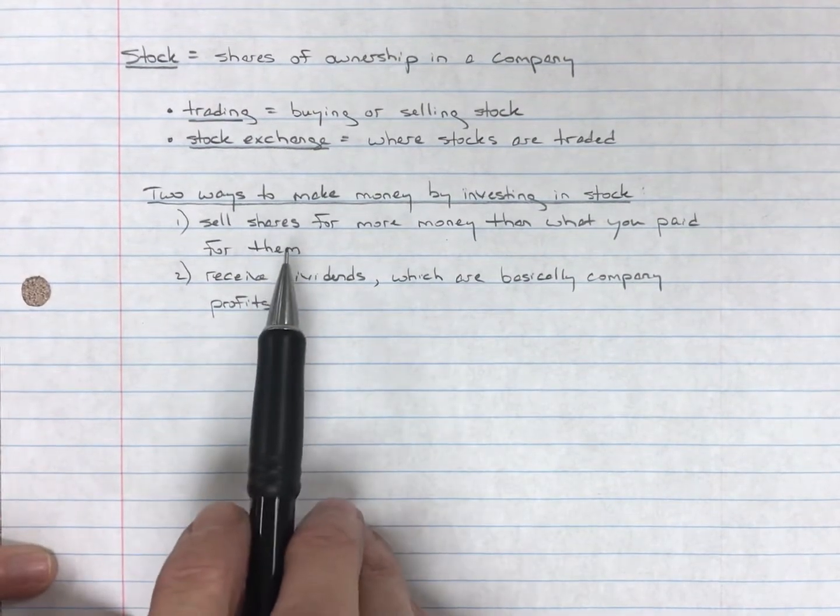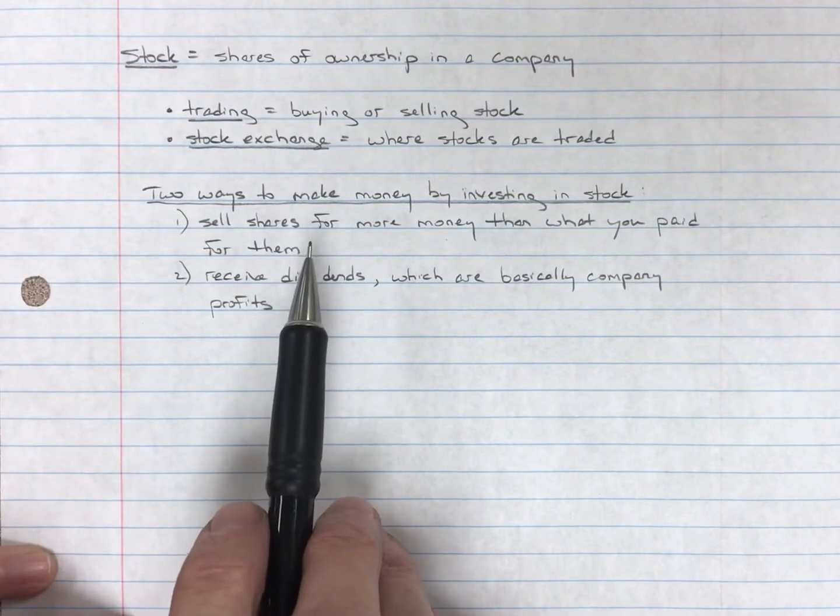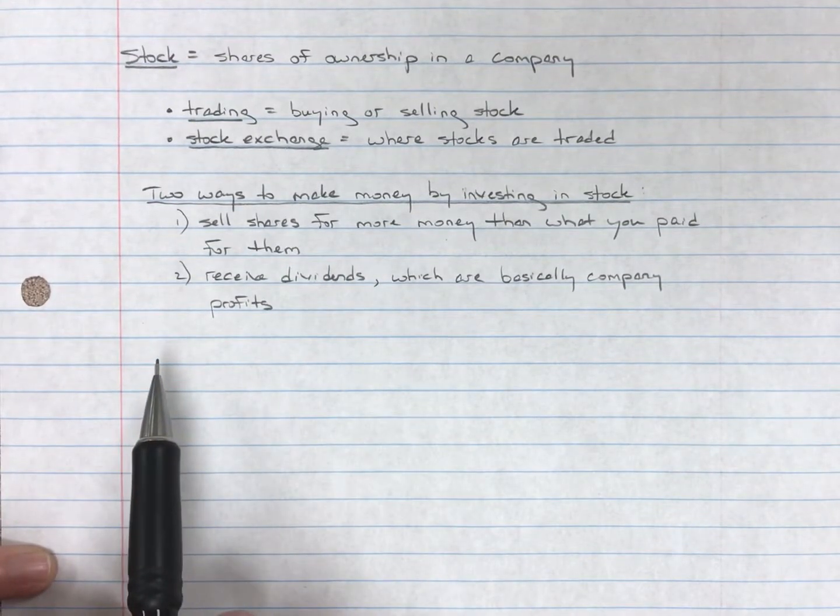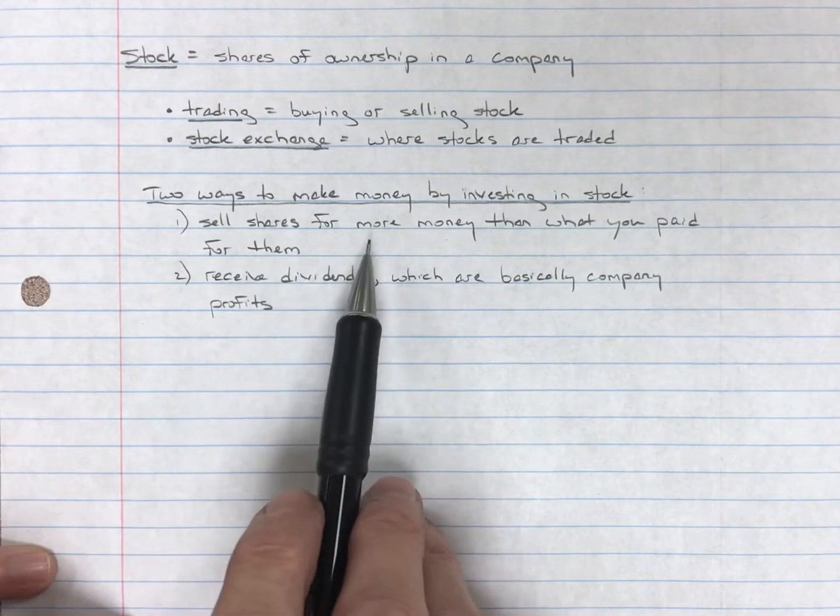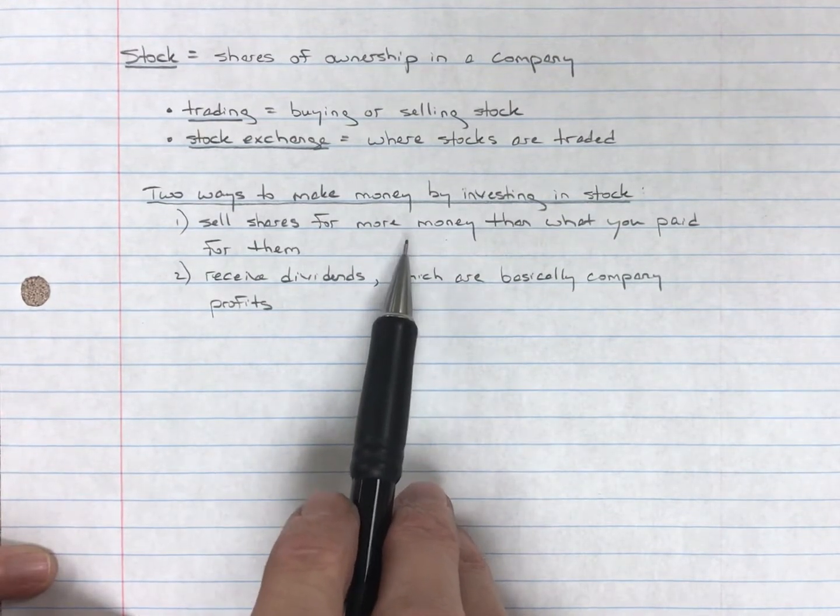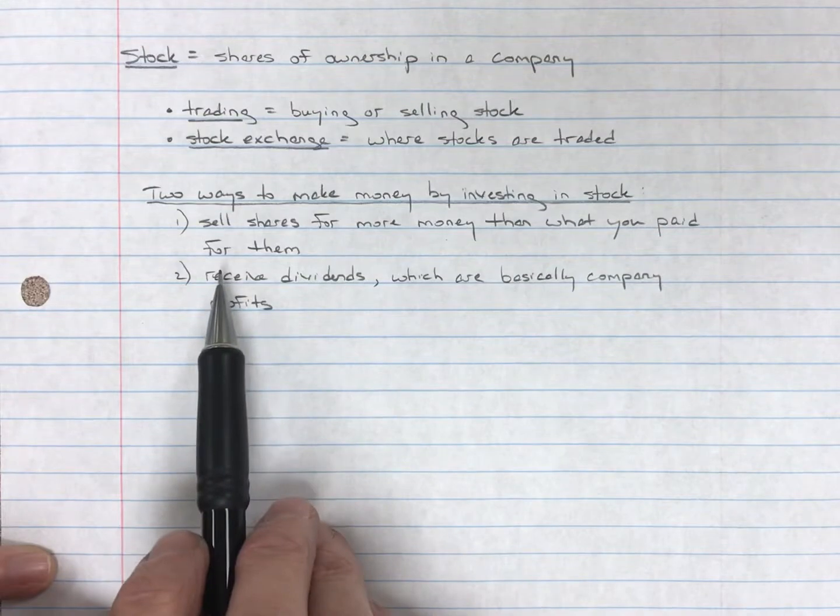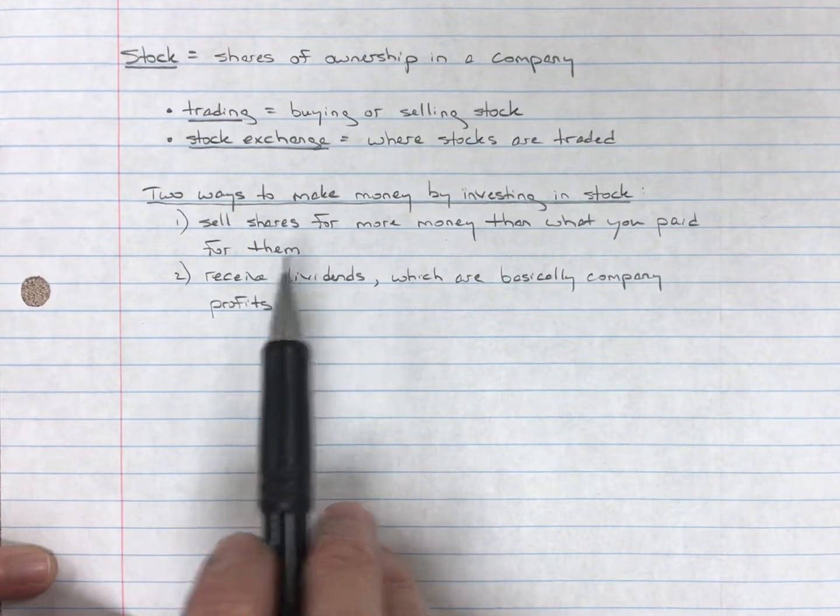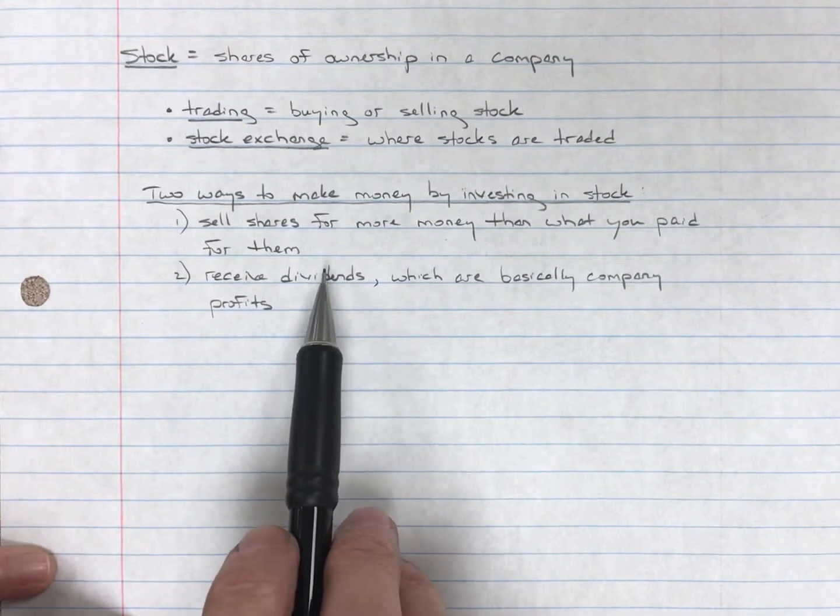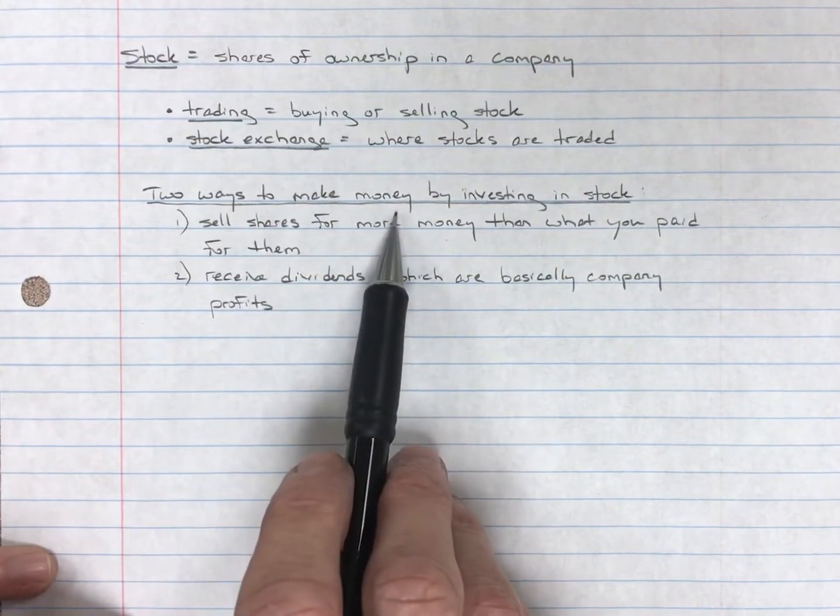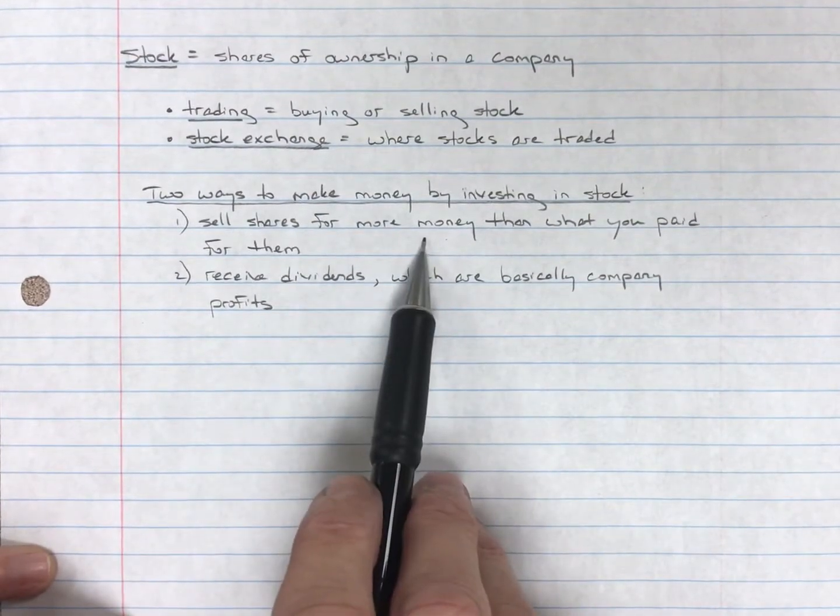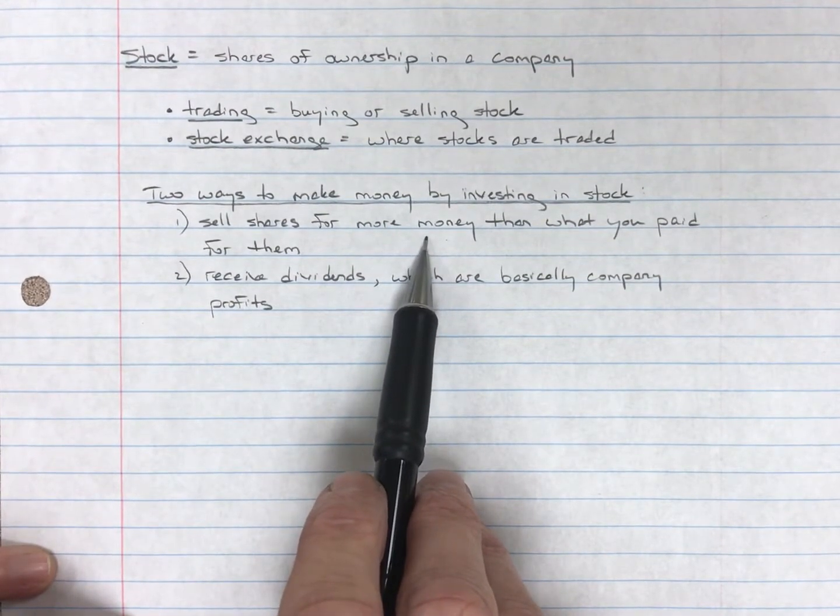Of course, if the company's value went down and you bought the stock for $10 a share, and a year later, it was worth $5 a share when you sold it, well, you just lost $5. So two ways to make money. You can also lose money by buying and selling shares, depending upon when you buy and when you sell.